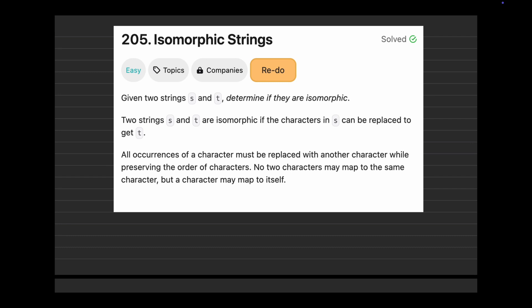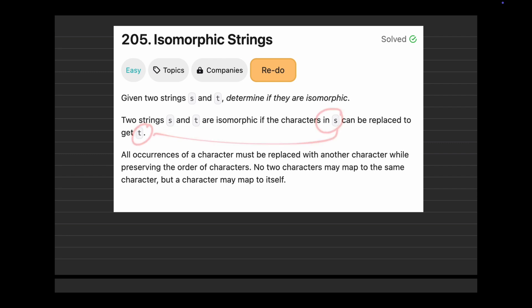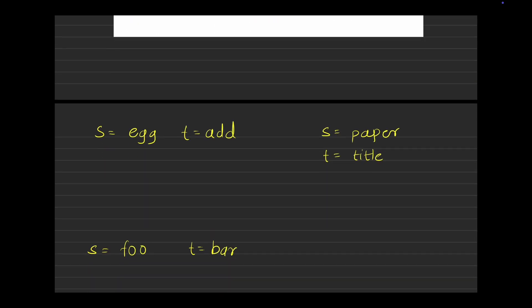Let's understand what exactly the question means. We are given two strings S and T, and we need to check whether the two given strings S and T are isomorphic or not. The question comes: what do you mean by isomorphic? The two strings S and T are called isomorphic if the characters of S can be mapped with characters of T.